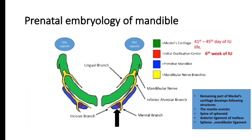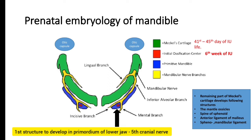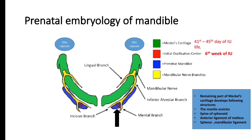Now coming to the prenatal embryology of the mandible. The first structure to develop in the primordium of the lower jaw is the trigeminal nerve, and then the branches of the trigeminal nerve give off the lingual branch and the inferior alveolar branch. The inferior alveolar nerve divides into the mental and the incisive branch. At the bifurcation of the inferior alveolar nerve is our initial ossification center for the mandible, which appears around the sixth week of intrauterine life.